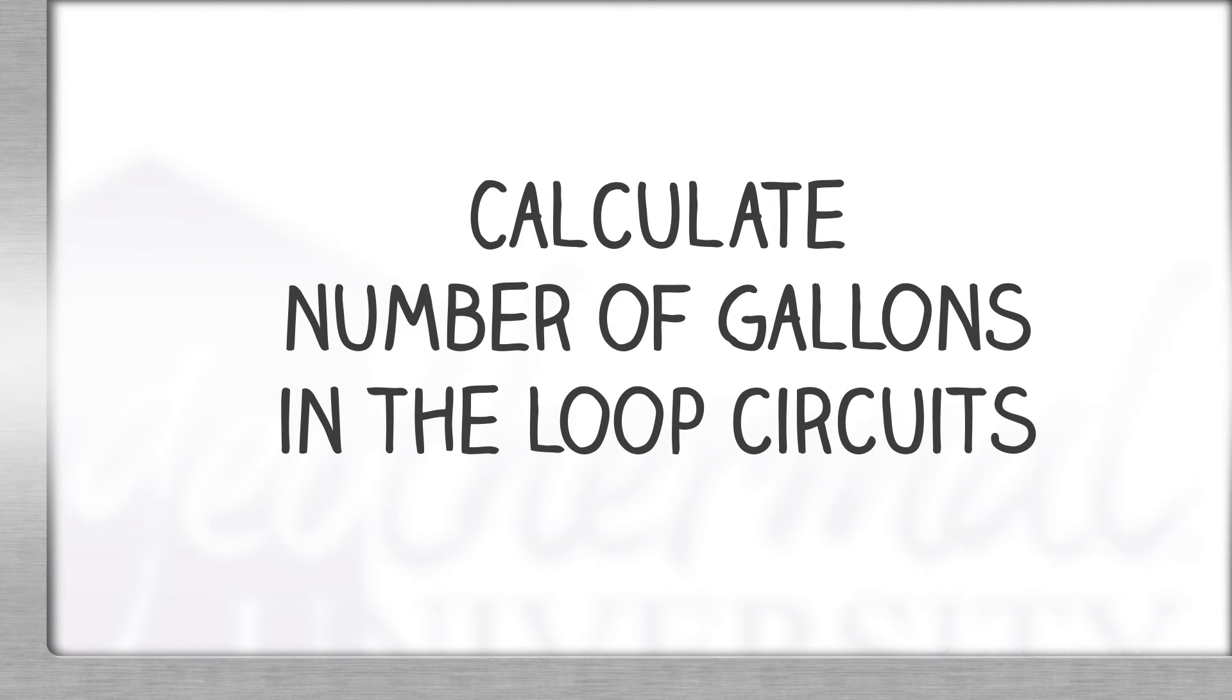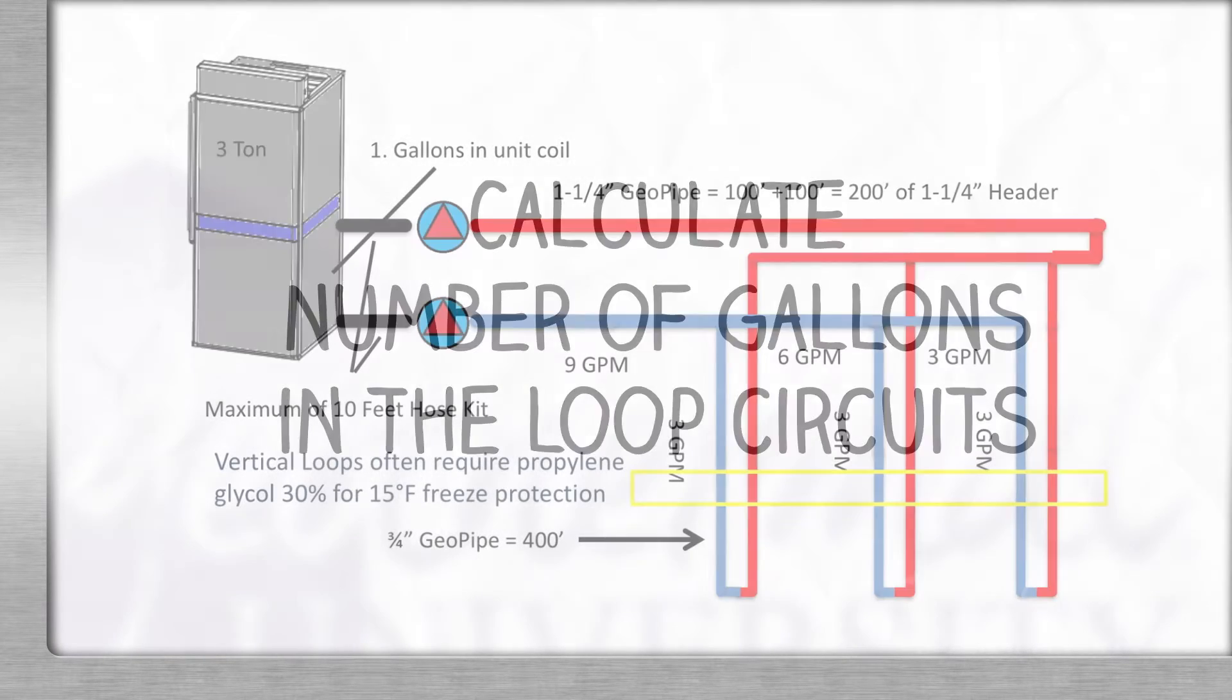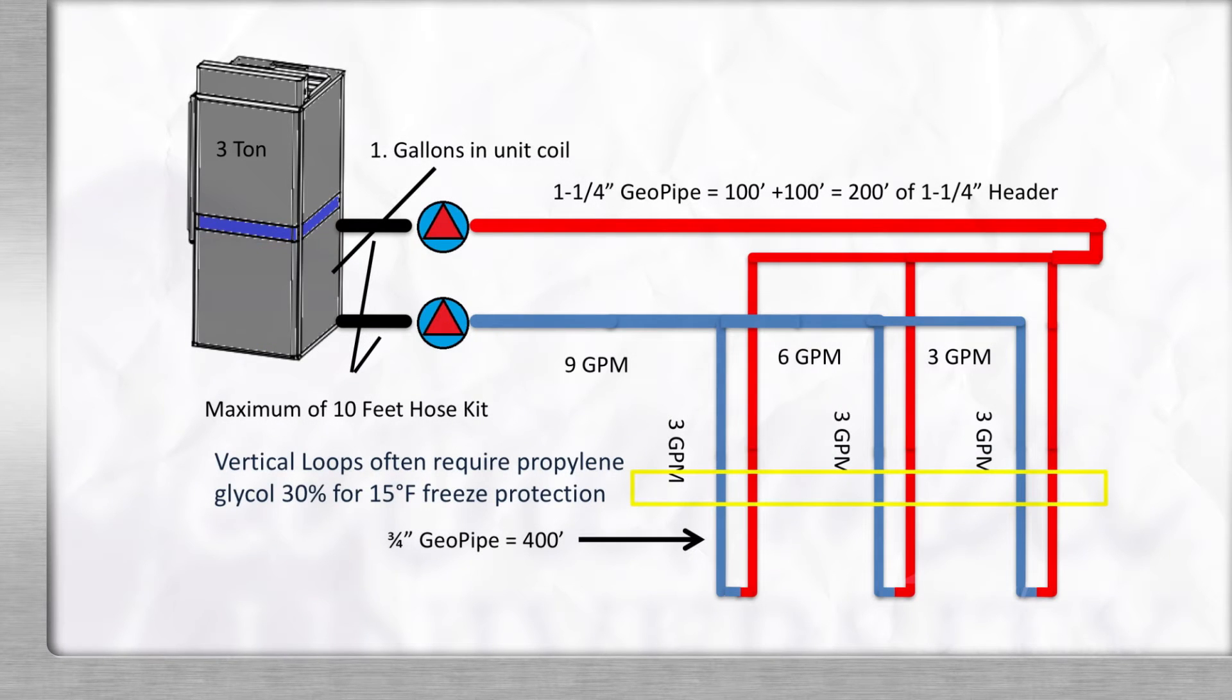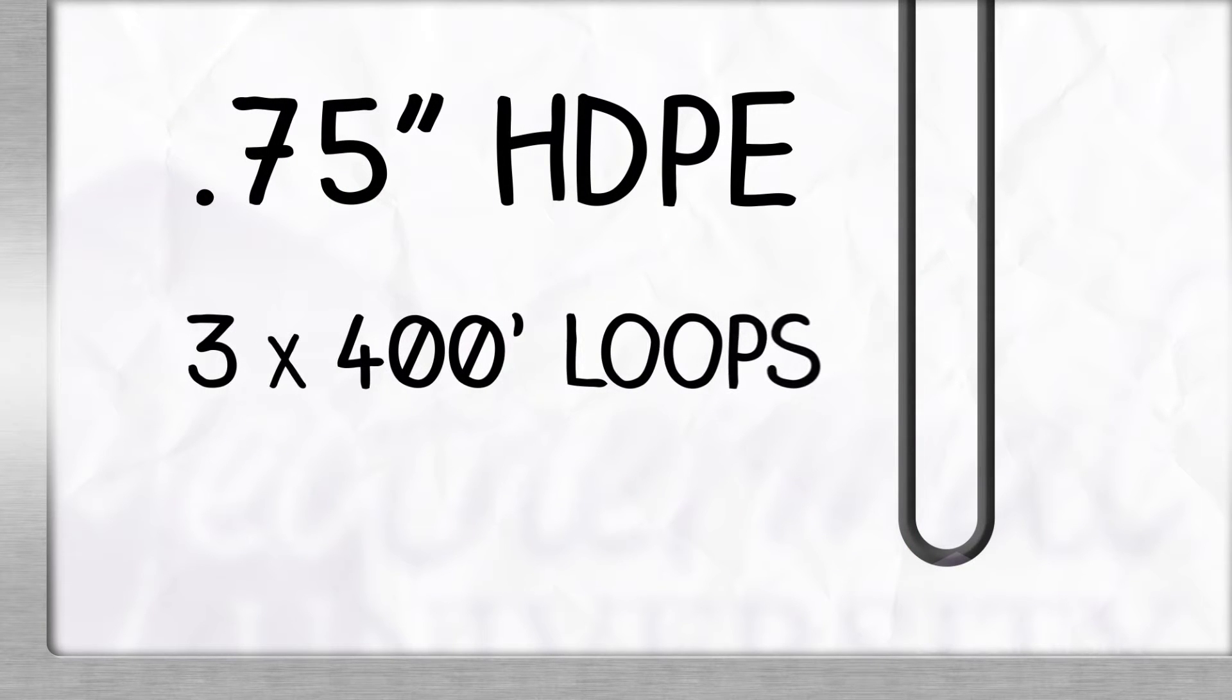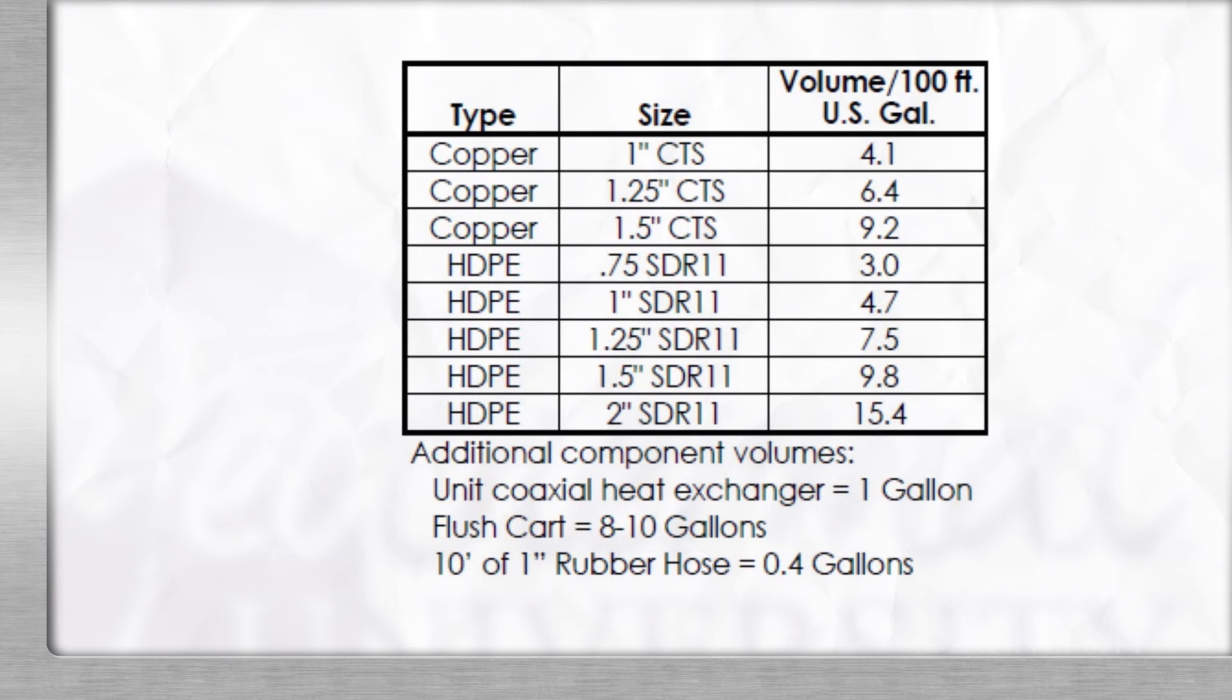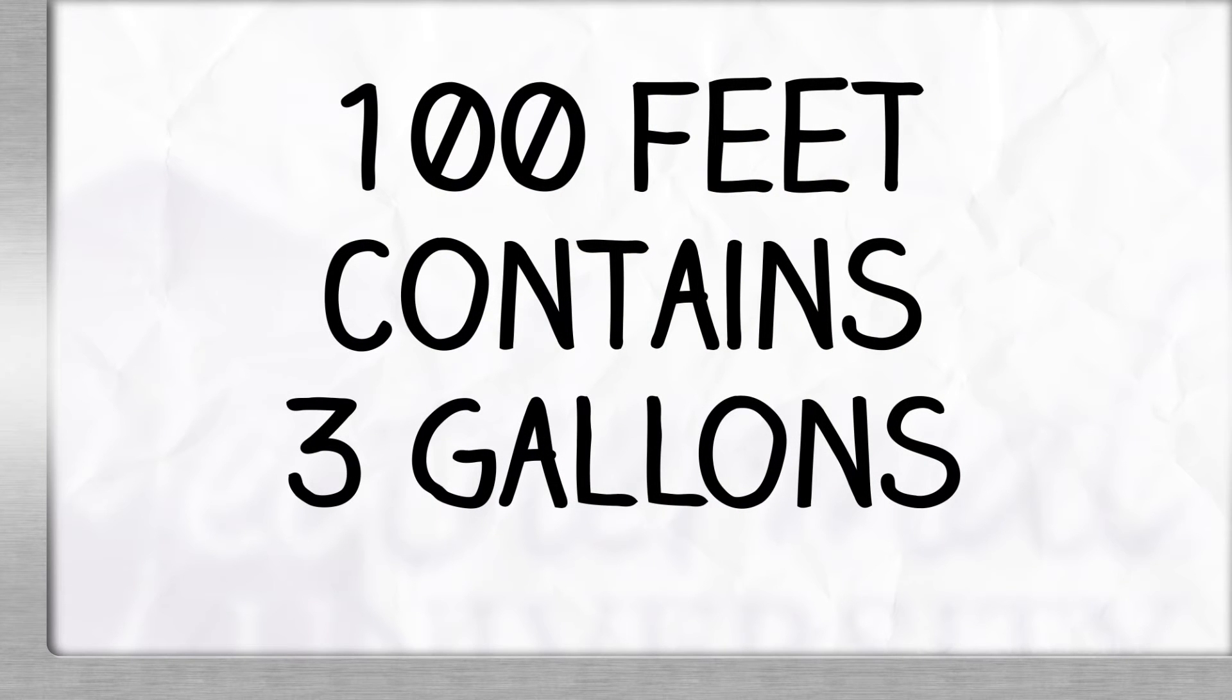Next, we'll need to calculate the number of gallons in all the loop circuits. In our example, our loop circuits consist of three-quarter inch HDPE pipe and three 400-foot loops. That is 200 down and 200 up. Using the table provided in the IOM, we scroll down to three-quarter inch SDR 11, and we find 100 feet contains 3 gallons.